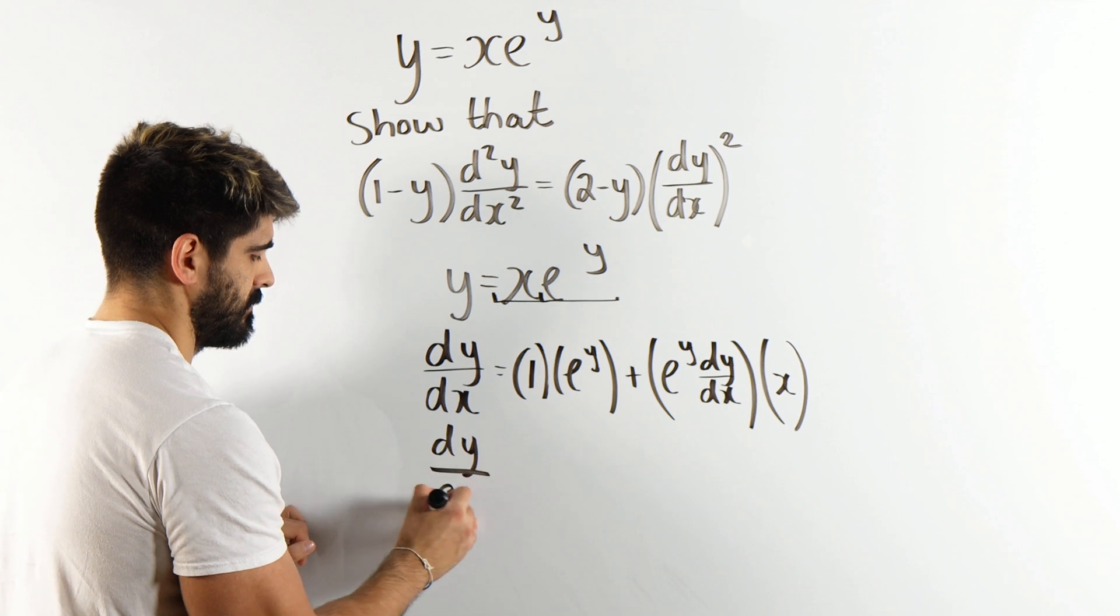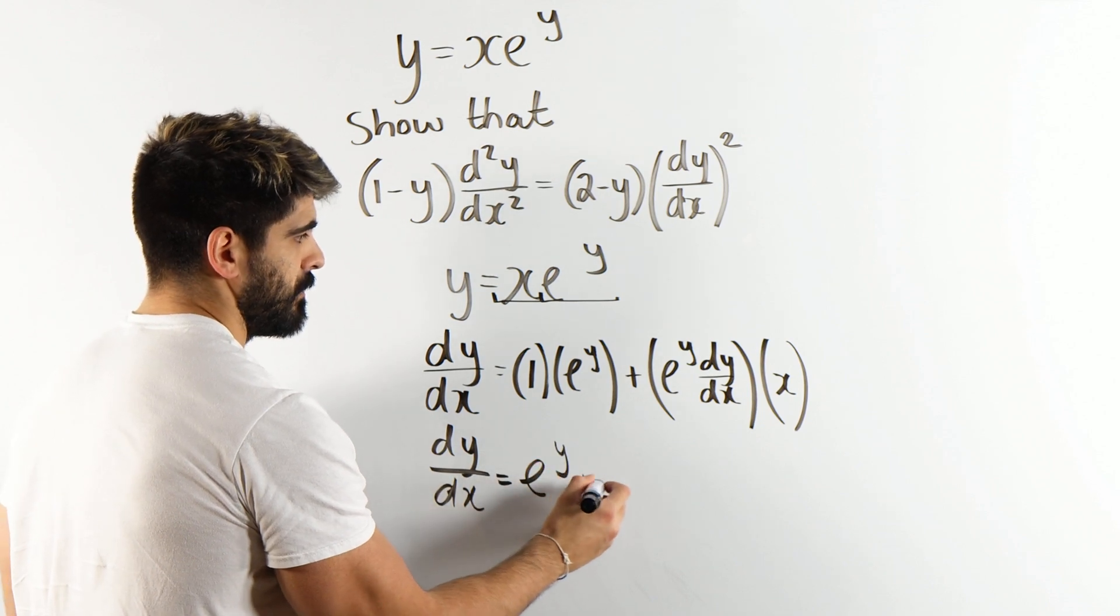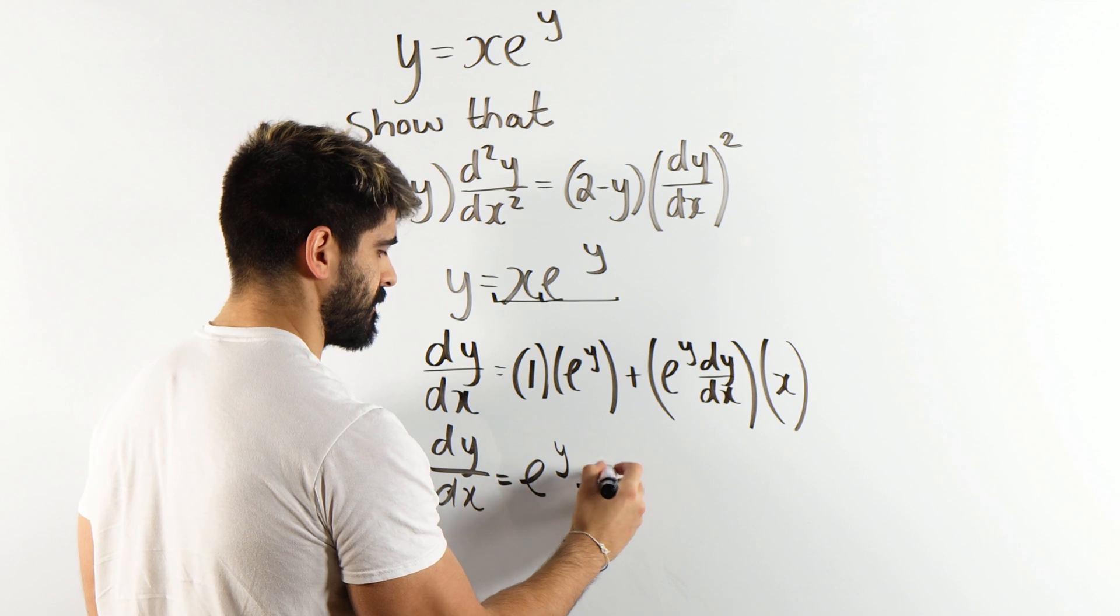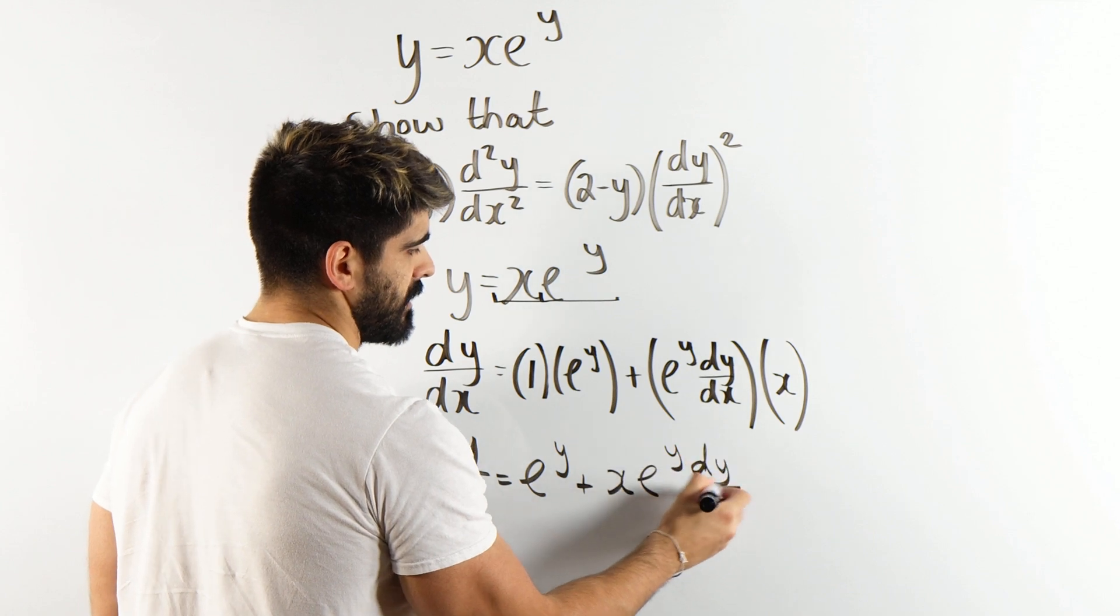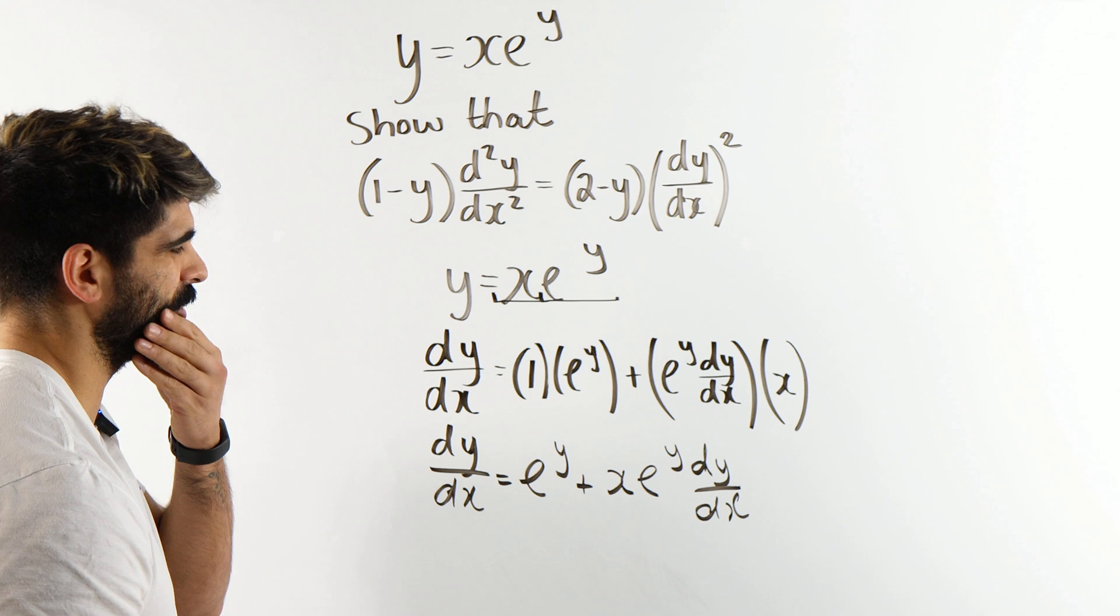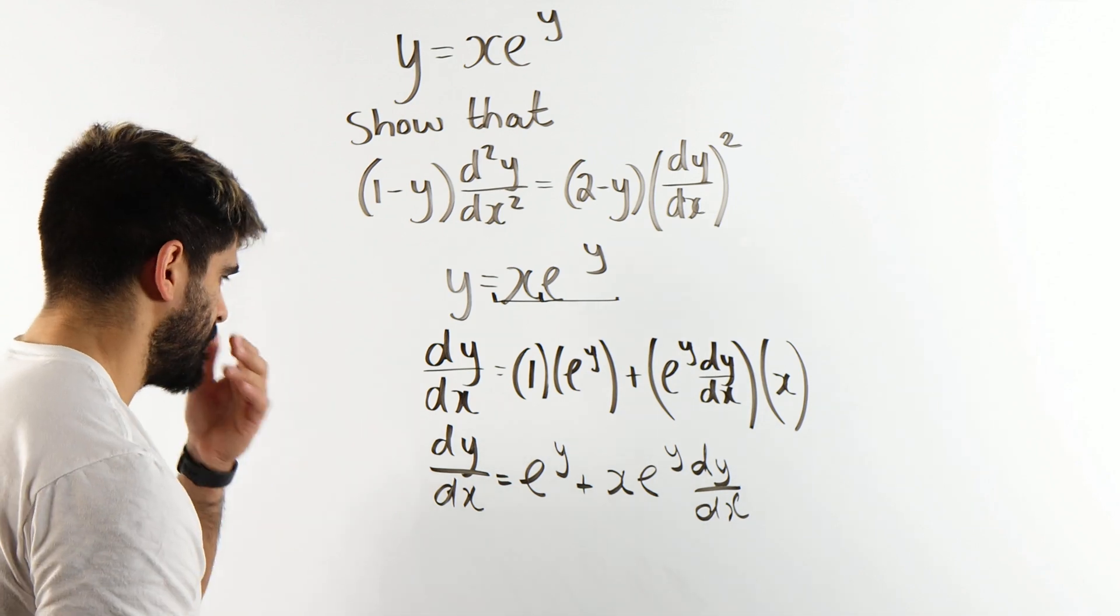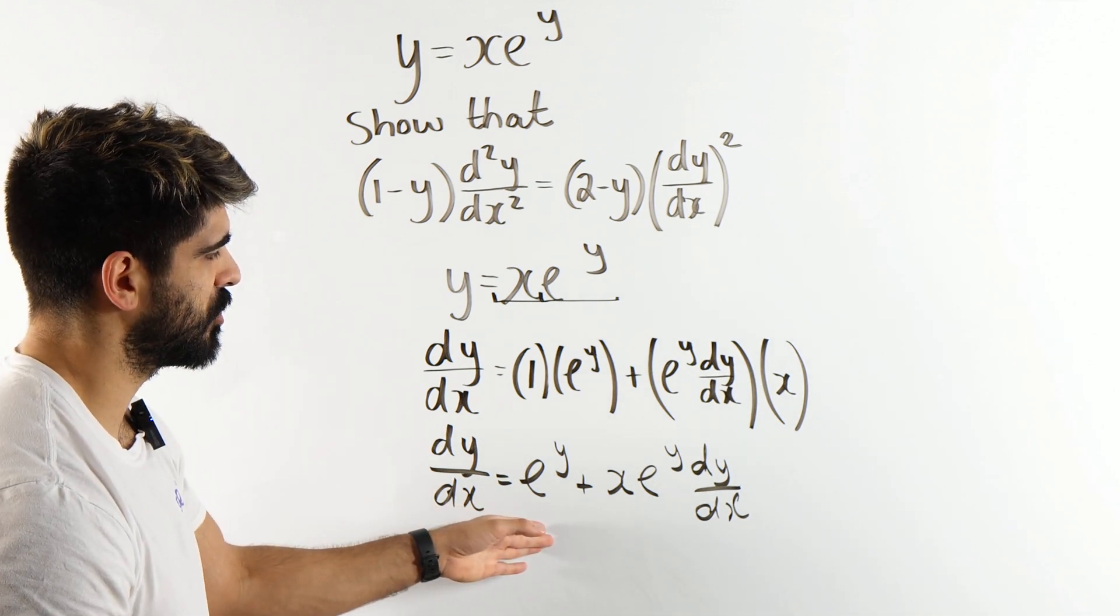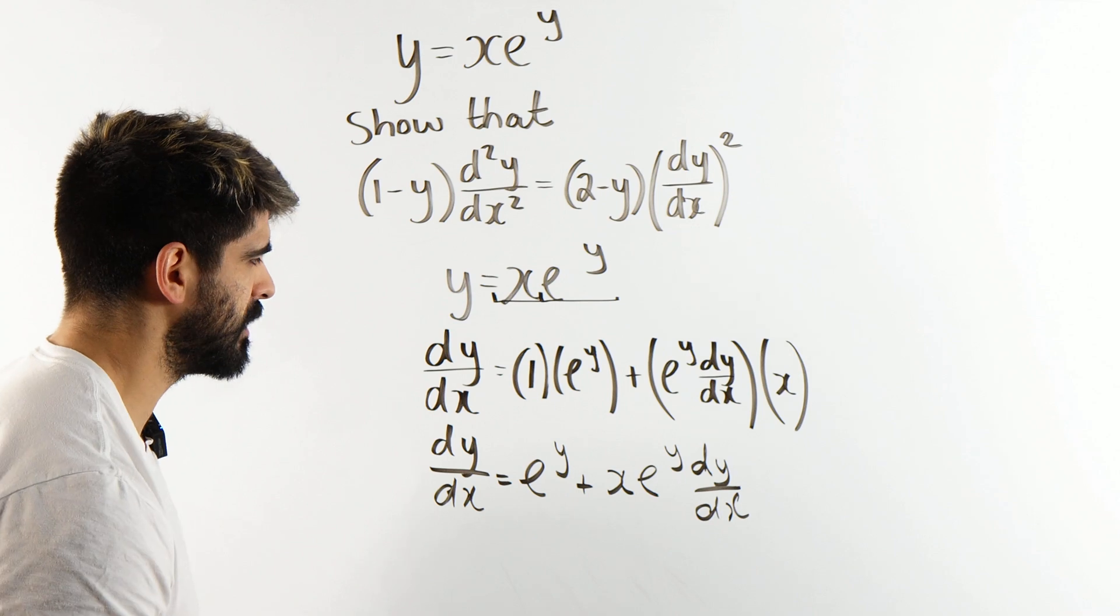So we have dy/dx is e to the y plus xe to the y dy/dx. Now we look at that. Could we differentiate again as it is? I don't think so, because if we go term by term, that's cool, but I'm a bit worried about that one. How do we differentiate that?